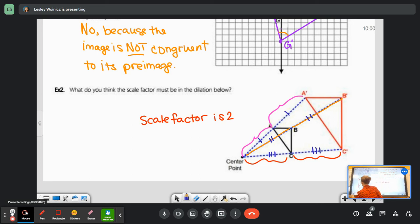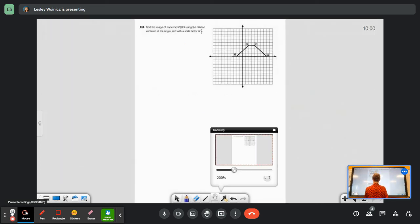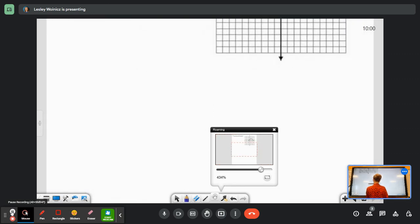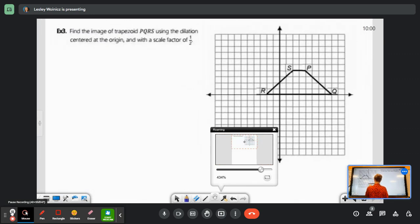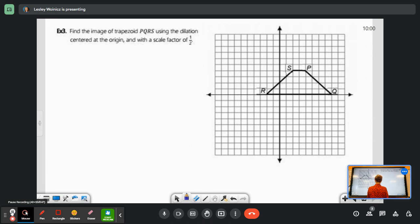Let's flip to the next. So I have to find the image of trapezoid PQRS using the dilation centered at the origin with a scale factor of one half. We're going halfsies. We're going to make a little mini image. Let's start with P.